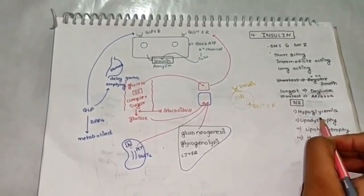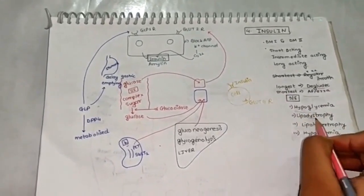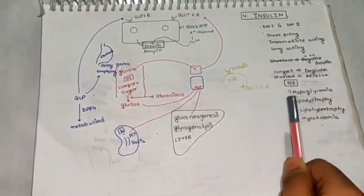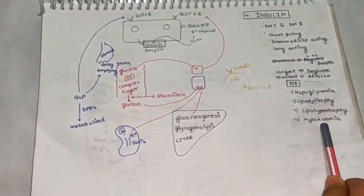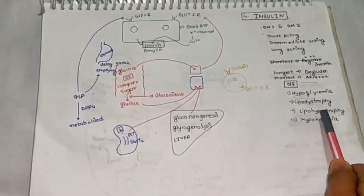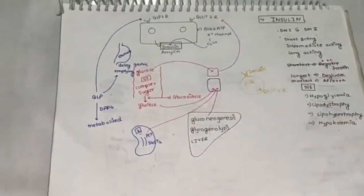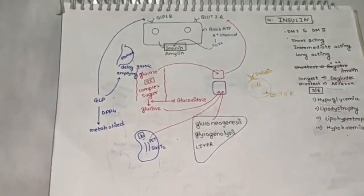Side effects which we know: hypoglycemia is a common side effect of insulin. Second is lipodystrophy. Because of continuous subcutaneous injection of insulin, it leads to lipodystrophy. Also, we have hypokalemia as a side effect of insulin and also lipohypertrophy. We know the mechanism of action of insulin. Insulin is a very big topic. We will discuss about it later.